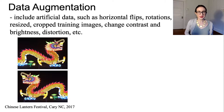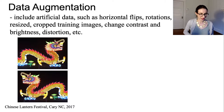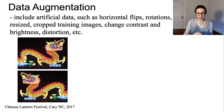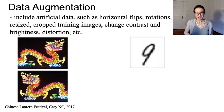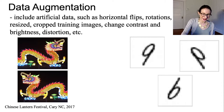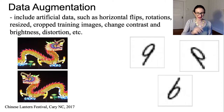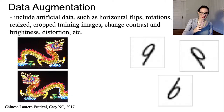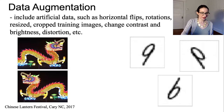Certain types of invariances are important to keep and certain ones we have to be careful of. For a dragon, if you flip it certain ways, it's still a dragon. But if you take a handwritten number nine and flip it certain ways, it is no longer a nine. So be careful with data augmentation — make sure you only encode invariances you actually want the network to be invariant to.